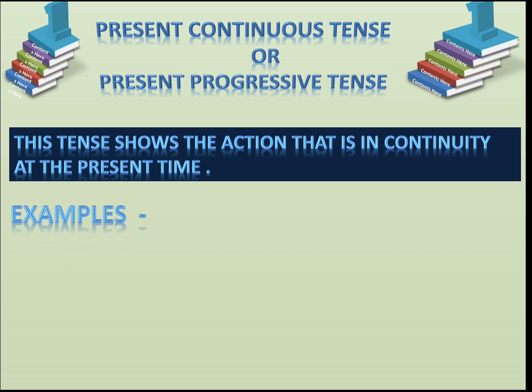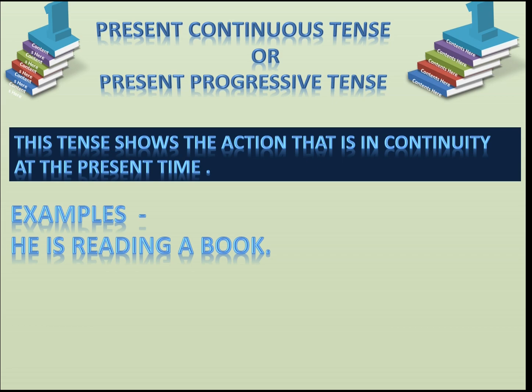Here are some examples. First: 'He is reading a book' — he is reading a book, meaning the action he is doing right now is reading. He is reading the book, so this is present continuous tense showing continuity.